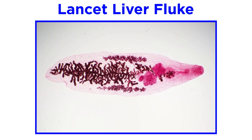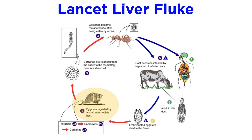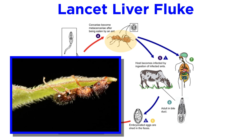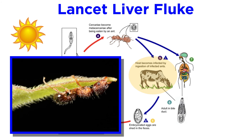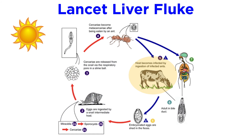Another example is the lancet liver fluke, which begins as an egg in cow dung that, if eaten by a snail, reproduces asexually until cercariae exit the snail through slime balls that are consumed by ants. Within the ants, the fluke burrows into the brain and induces behavior alteration, forcing the ants to fasten their mandibles to a blade of grass until they are consumed by a passing herbivorous mammal, such as a cow. The ants will behave as part of their colony during the day, and only move up to the tip of a blade of grass at night — likely an evolutionary mechanism that maximizes transmission potential, as the ant would desiccate and die more quickly in the daytime.